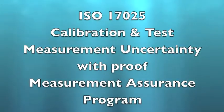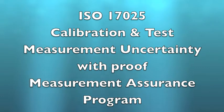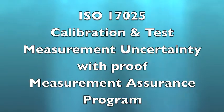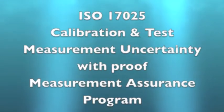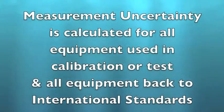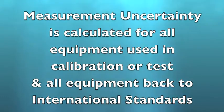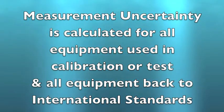In the laboratory, ISO 17025 concentrates on calibration and test, the measurement uncertainty with all the proof, including calculations, as well as a measurement assurance program for all the types of measurements made by the laboratory. Measurement uncertainty is calculated for all the equipment used in the calibration or the test, and all the equipment used to calibrate that equipment, all the way back to the International Standards for Measurements.